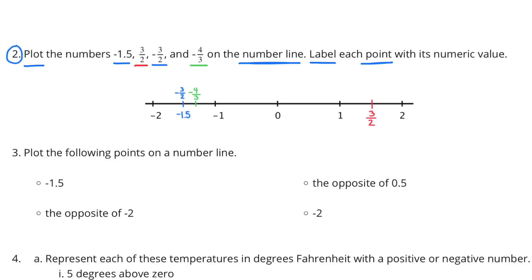To the right of it, or slightly closer to 0, would be negative 4 thirds. And then on the positive side of 0, we have 3 halves. Since 3 halves is the same as 1 and 1 half, its location on the number line is exactly between 1 and 2.